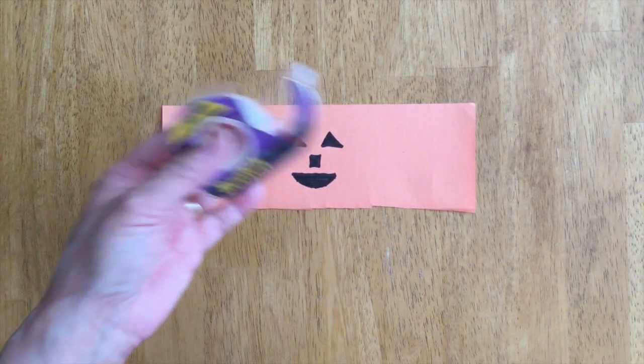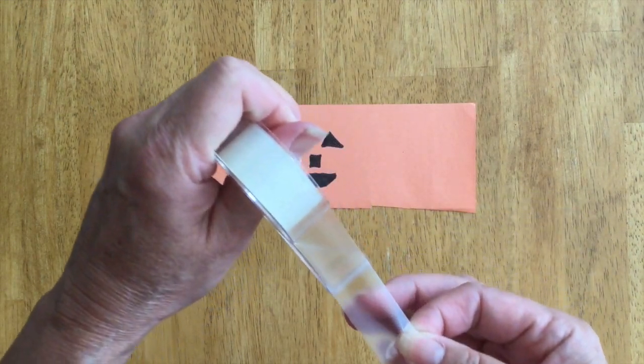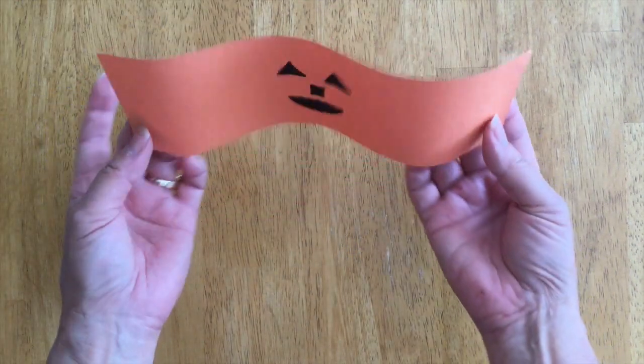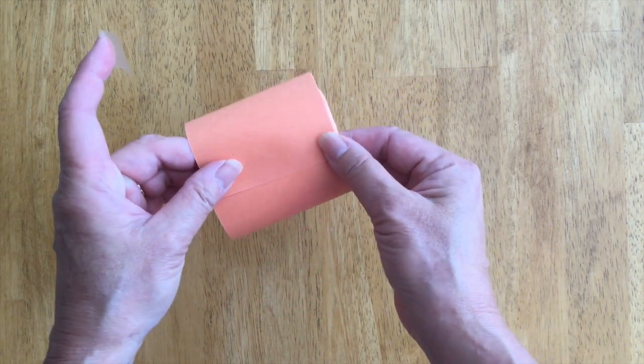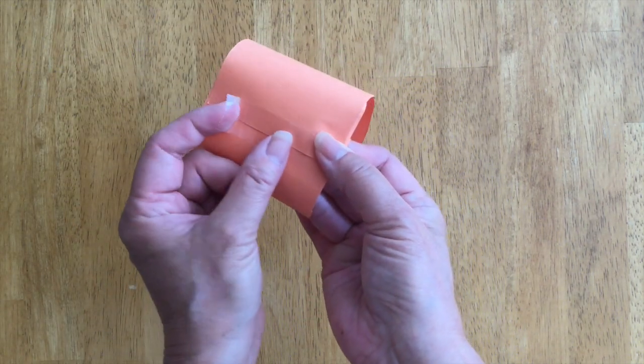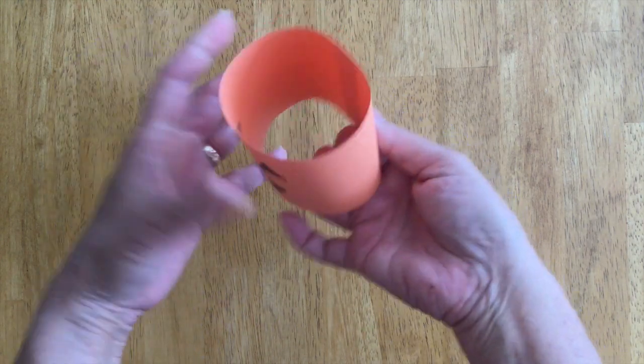Then you're going to take some tape and pull out a strip, circle it up like this, and then tape it right down the middle to hide that seam.